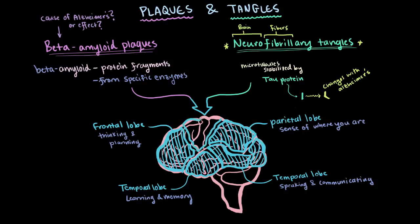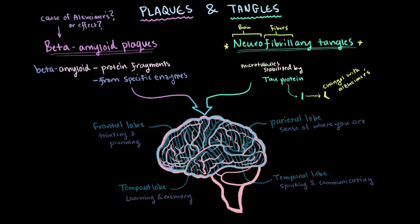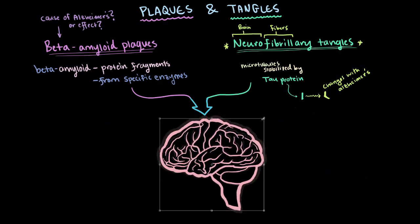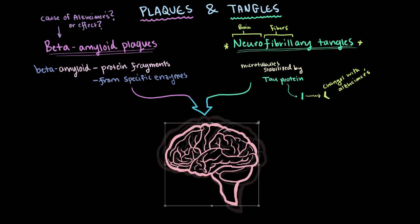In severe and late-stage Alzheimer's disease, these plaques and tangles have spread throughout most of the cortex. And as this happens, the cortex gets seriously damaged. And due to this widespread cell death, the brain actually shrinks dramatically.